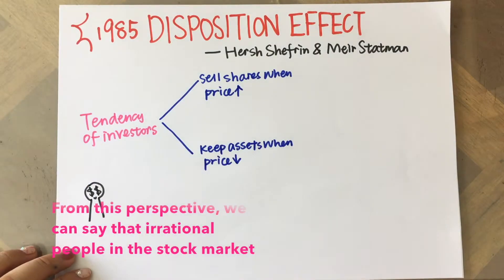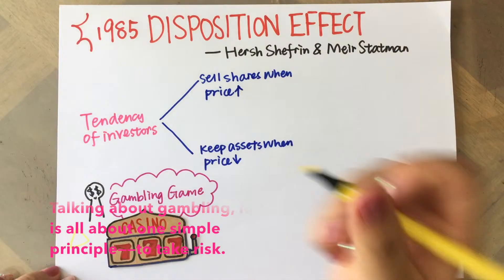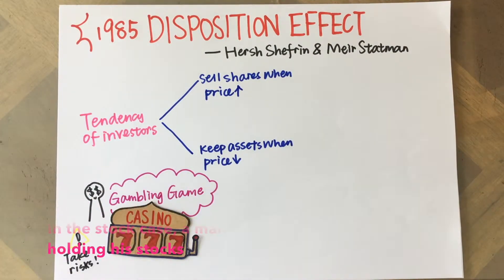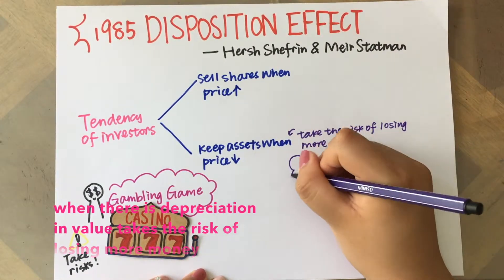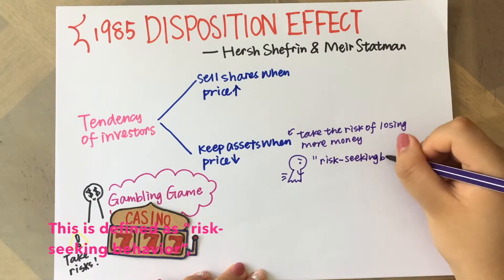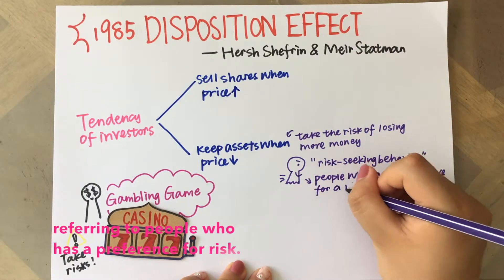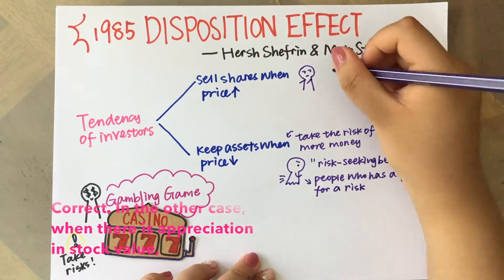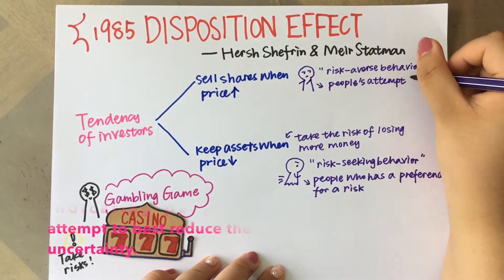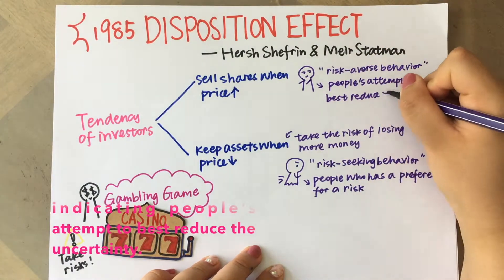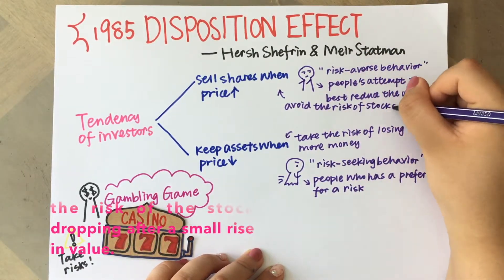From this perspective, we can say that irrational people in the stock market are having a gambling game. Talking about gambling, it is all about one simple principle: to take risks. In the stock case, a man holding his stocks when there is depreciation in value takes the risk of losing more money as the stock might drop more. This is defined as risk-seeking behavior, referring to people who have a preference for risk. In the other case, when there is appreciation in stock value, the immediate selling of stocks is called risk-averse behavior, indicating people's attempt to best reduce uncertainty. People are trying to avoid the risk of the stock dropping after a small rise in value.